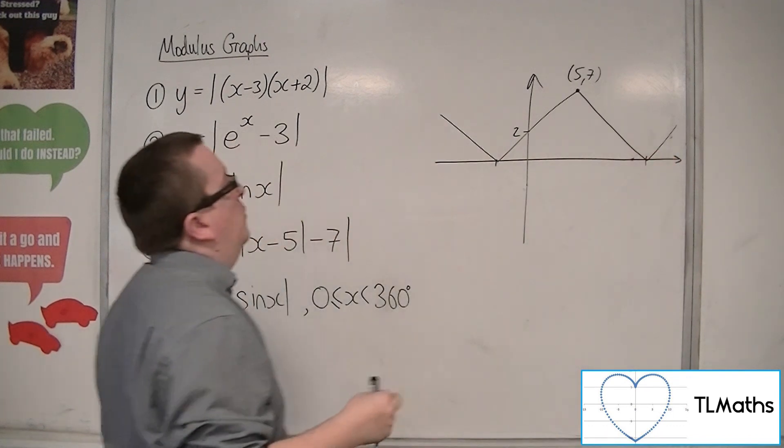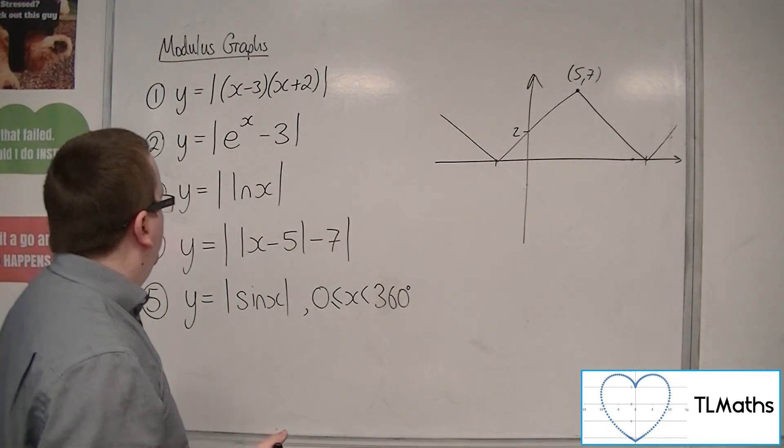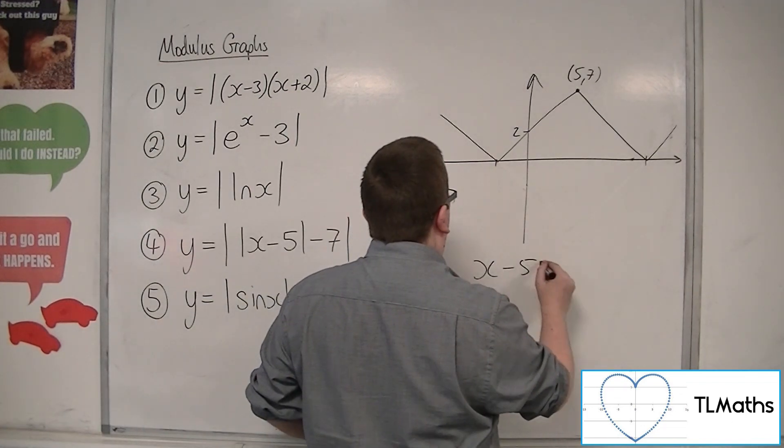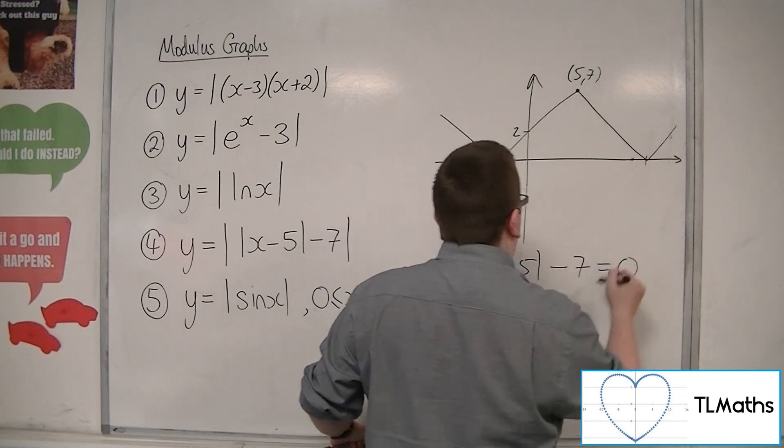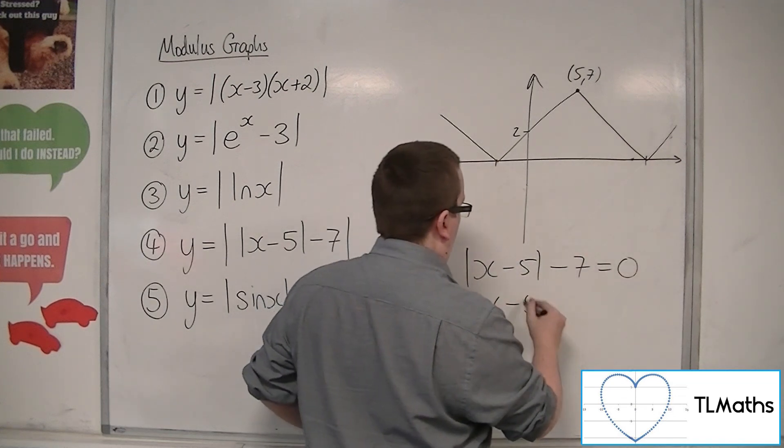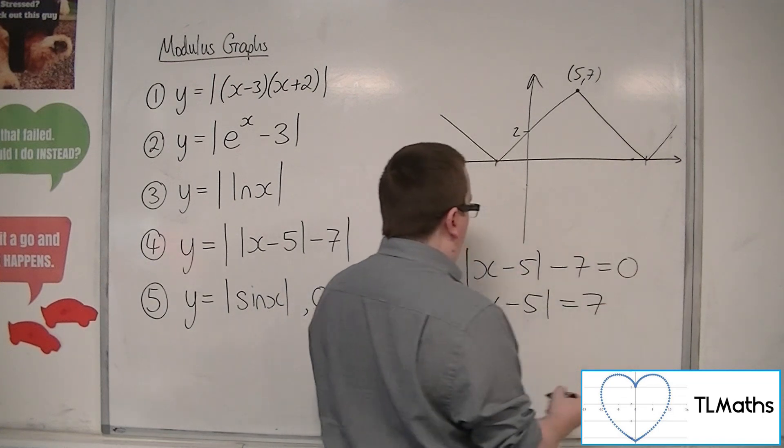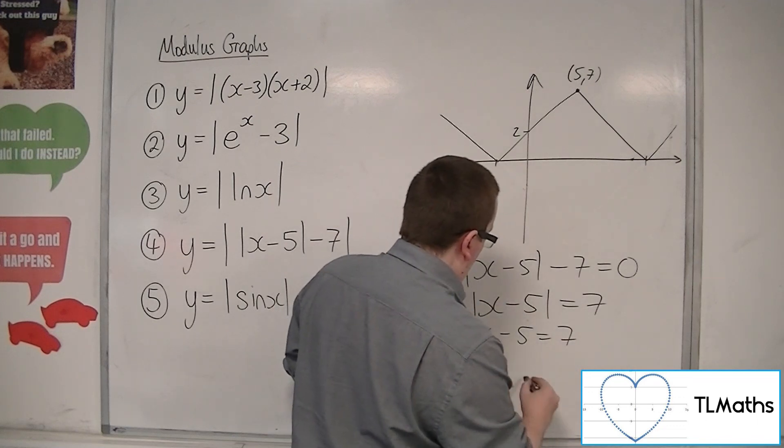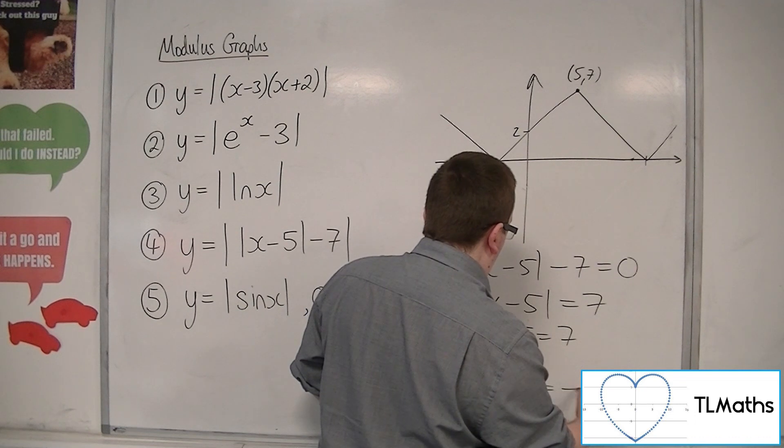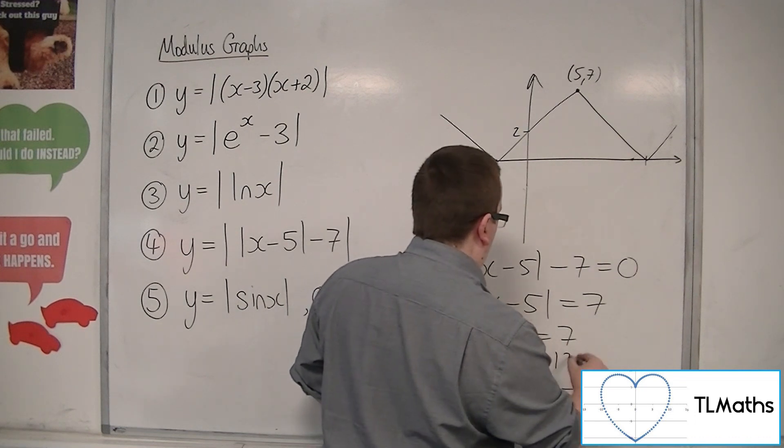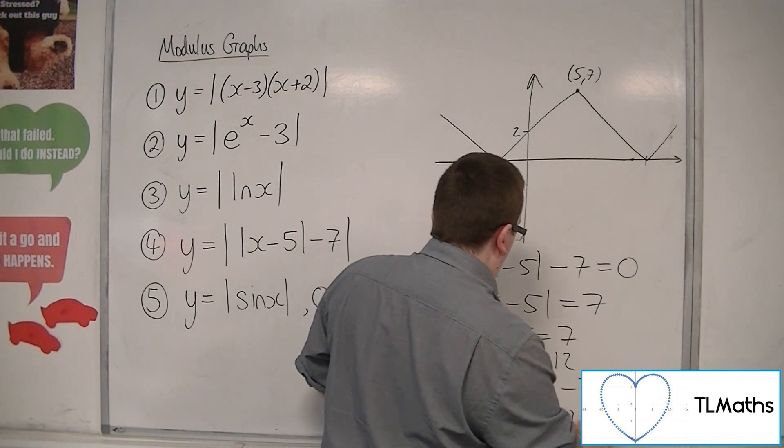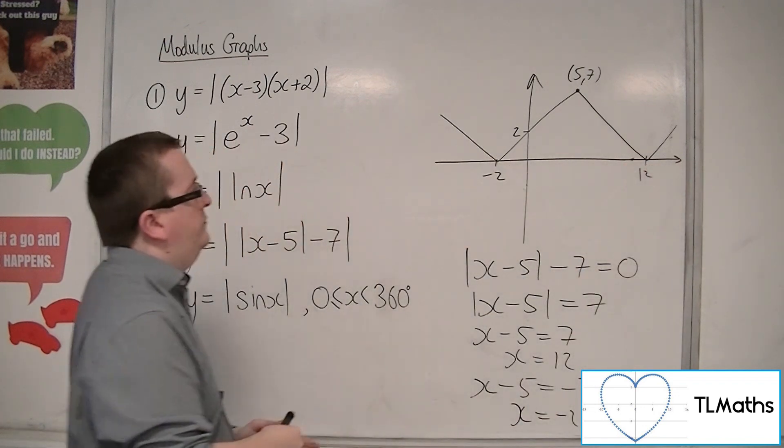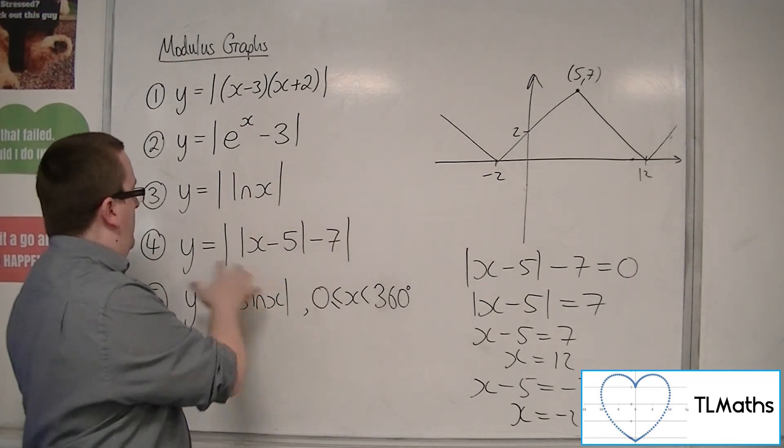Now we could identify where it's crossing the x-axis. So we could do that by putting x minus 5 modded minus 7 equal to 0. So add the 7 to both sides. So either x minus 5 was equal to 7, or x minus 5 was equal to minus 7. So x equals 12, or x equals minus 2. So minus 2 and 12, and that's the graph of number 4.